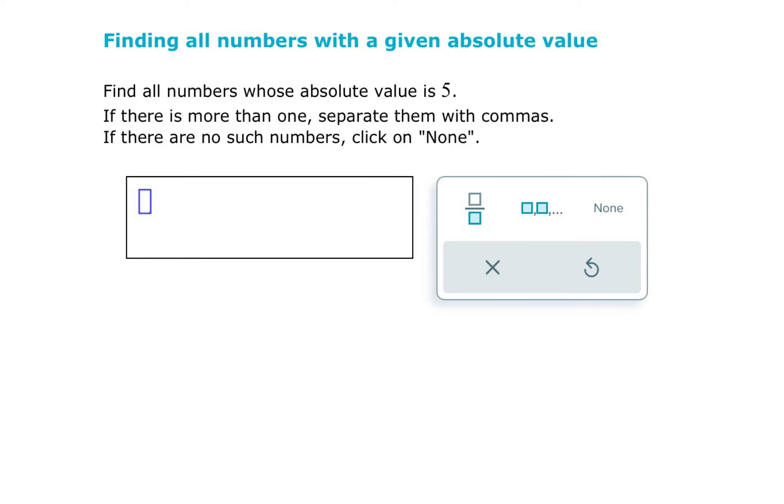This topic is finding all numbers with a given absolute value. For this, we're going to kind of go backwards. We know the absolute value, we want to know what numbers could be inside the bars.